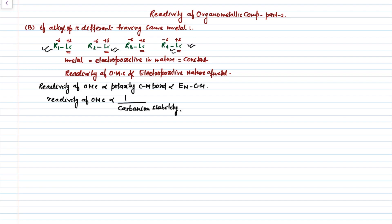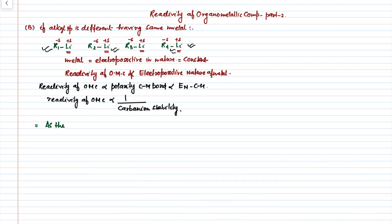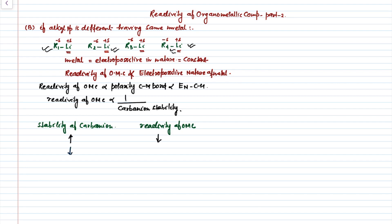So the conclusion is: as the stability of the carbanion increases, the reactivity of the organometallic compound will decrease. And as the stability of the carbanion decreases, the reactivity of the organometallic compound will increase. We will try to understand this theory with the help of some examples.